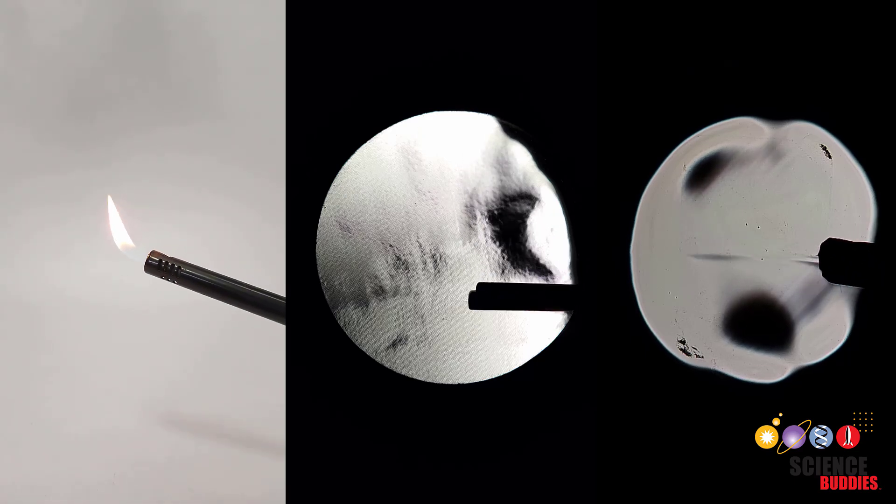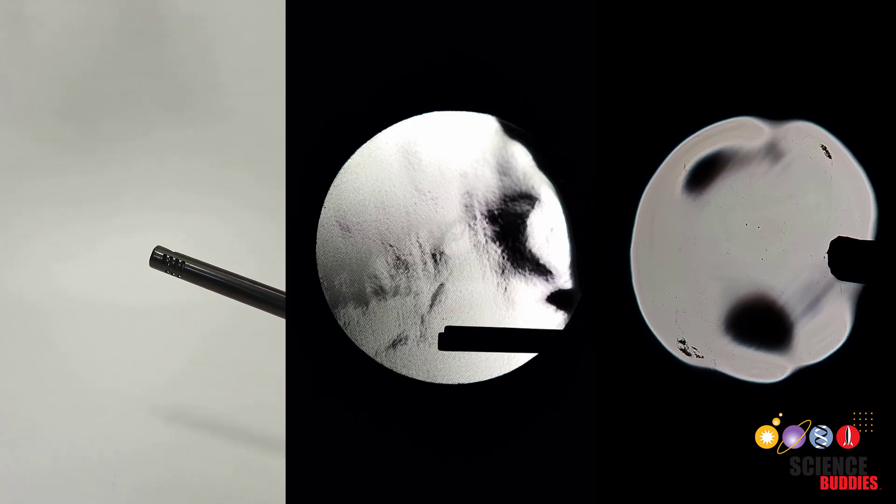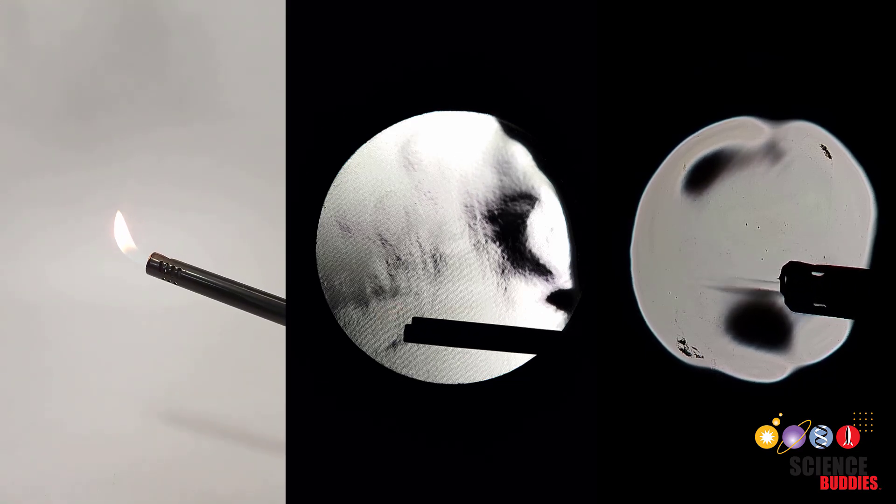If I film this grill lighter, I can see the flame, but with a special optical setup, I can see the air moving around the flame, or even the jet of fuel coming out of the lighter before it ignites.